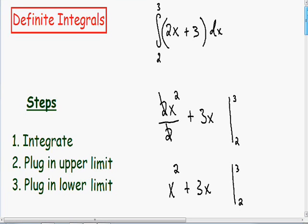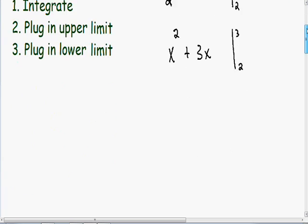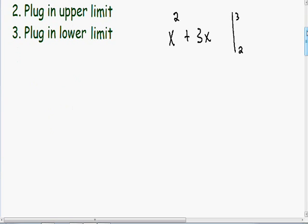Now we can move on to step number 2 and plug in our upper limit. What we want to do is take our upper limit of 3 and plug it in everywhere there's an x. So instead of writing x squared, I'm going to write 3 squared. And instead of writing plus 3 times x, I'm going to put 3 times 3.